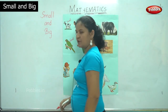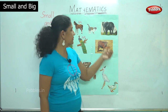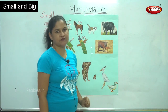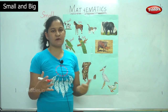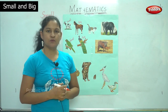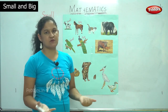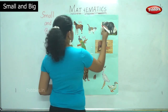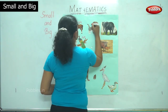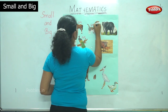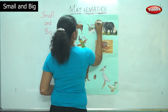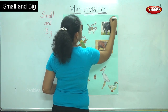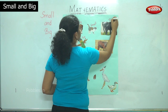In the next picture we have a cat and an elephant. Just by looking at these two animals we could easily say which is big and which is small. The cat is small, and the elephant is big or huge.